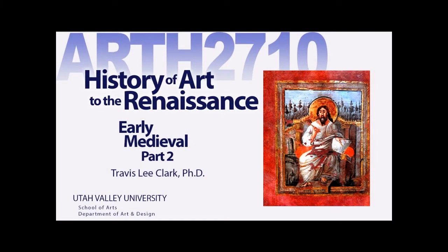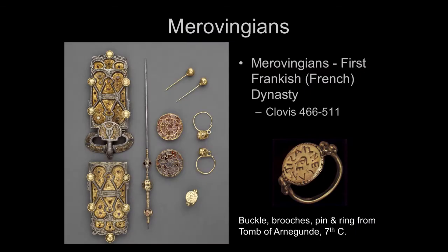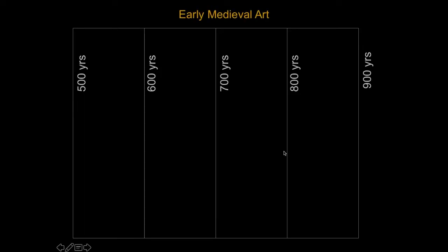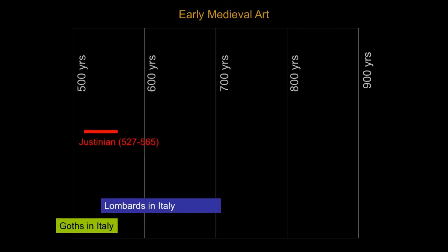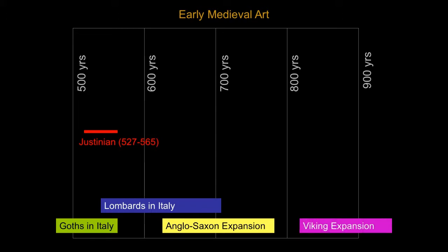Welcome back. This is the second half of Early Medieval. So when we last left off, we were talking about art of the British Isles and art of the Viking period. We're talking about a period that essentially goes from about the end of the 5th century all the way up into about the 900s. We have Goths and Italy and Lombards, the Vandals, the Anglo-Saxon expansion from about the 6th to the 8th century, and then the Viking expansion in the 8th and 9th century.